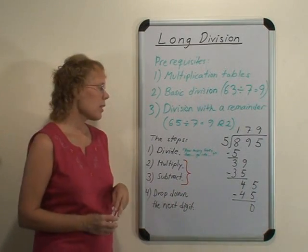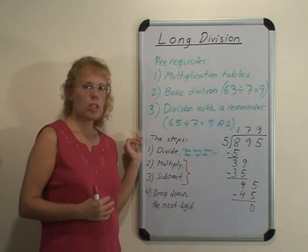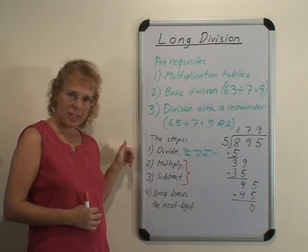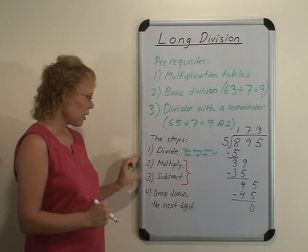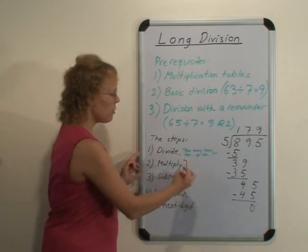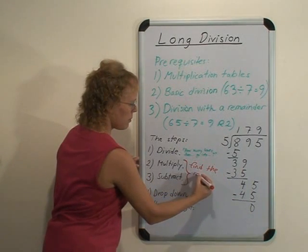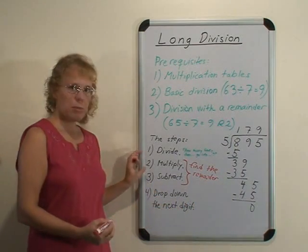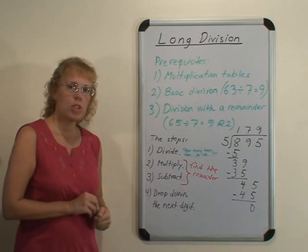What can seem difficult for children is that first of all there are many steps like this, but that we're multiplying and subtracting in the middle of division. These two steps here—multiply and subtract—have to do with finding the remainder, and these are the steps that can seem confusing to children.